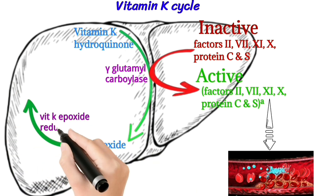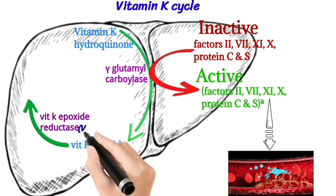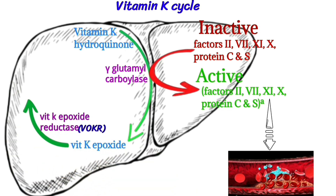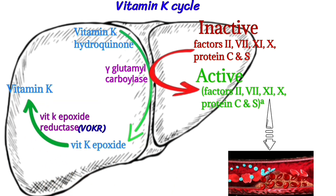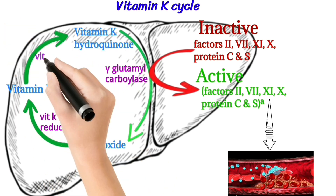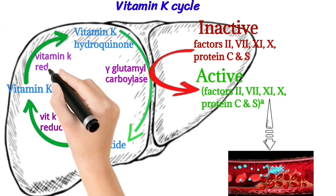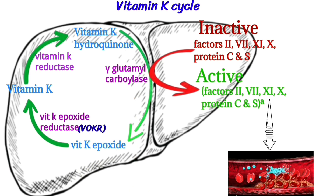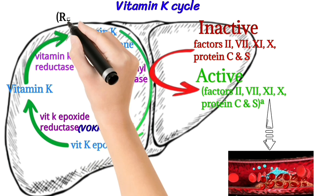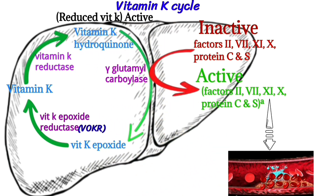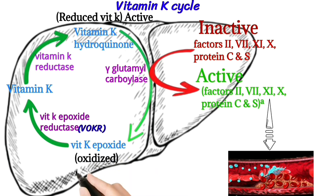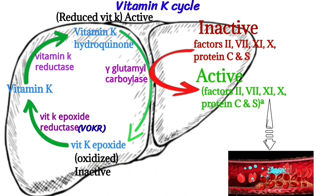With the help of vitamin K epoxide reductase, it converts to vitamin K. And again, vitamin K converts into vitamin K hydroquinone with the help of vitamin K reductase. Vitamin K hydroquinone is the active form, and vitamin K epoxide is the oxidized and inactive form.